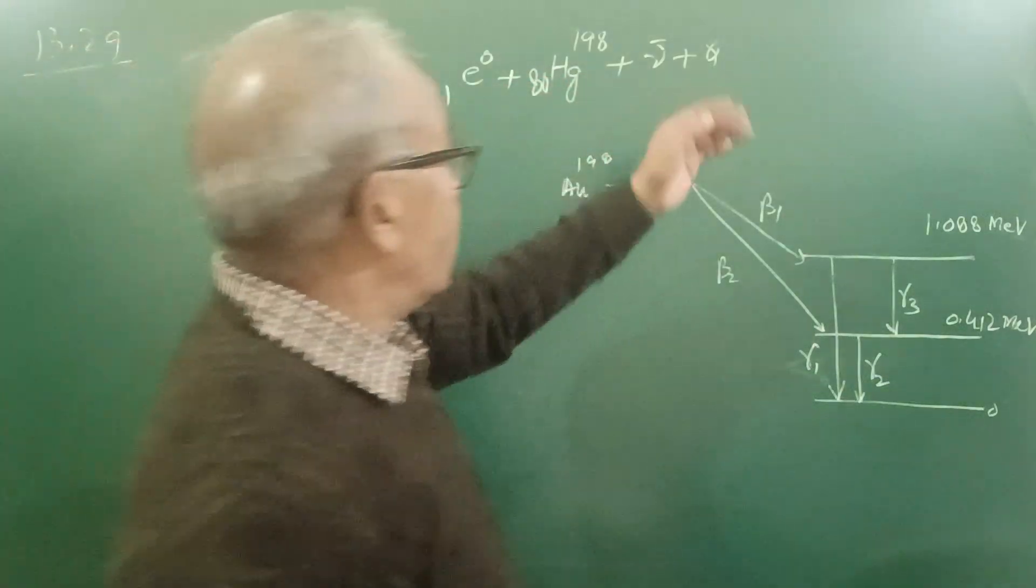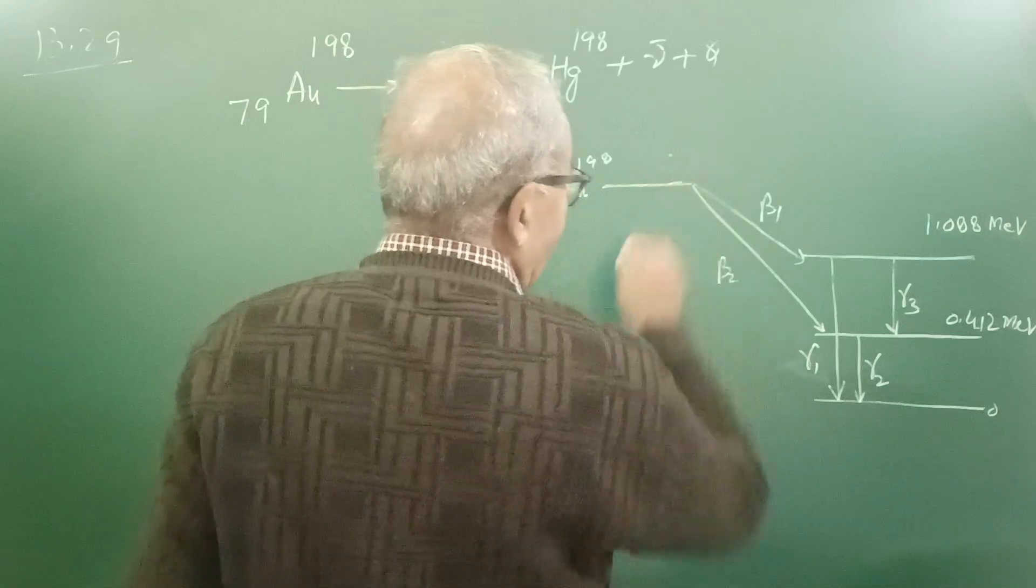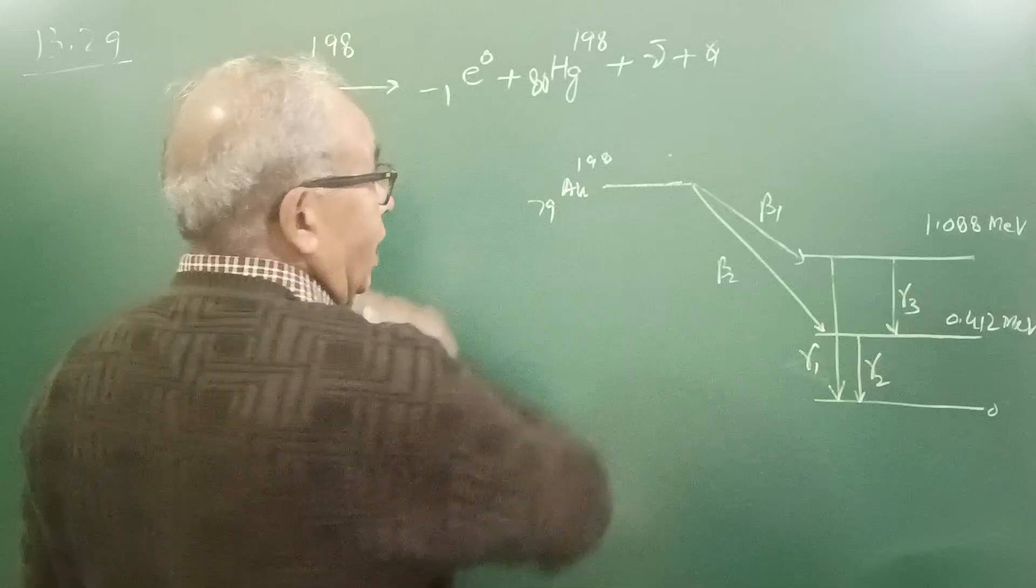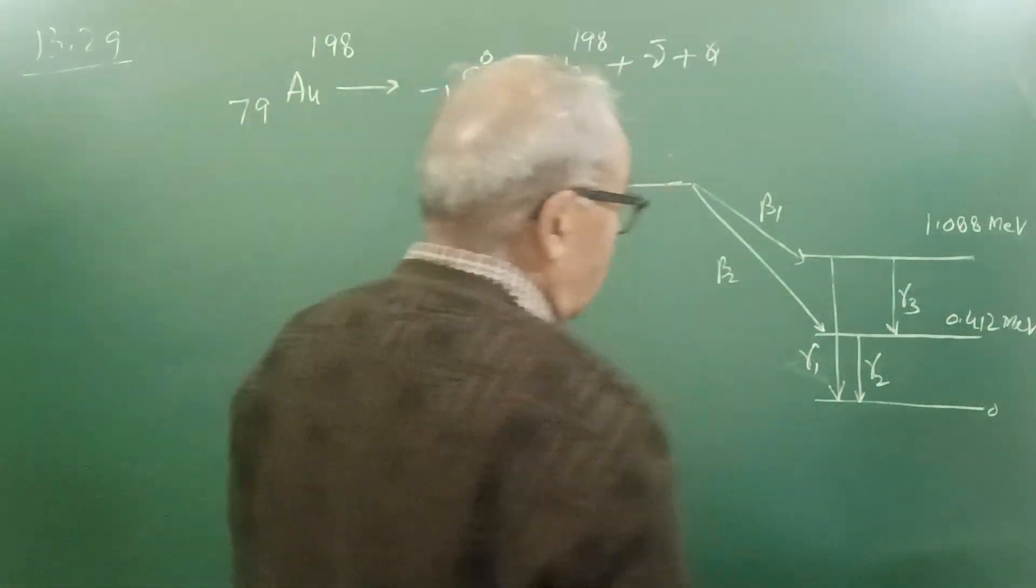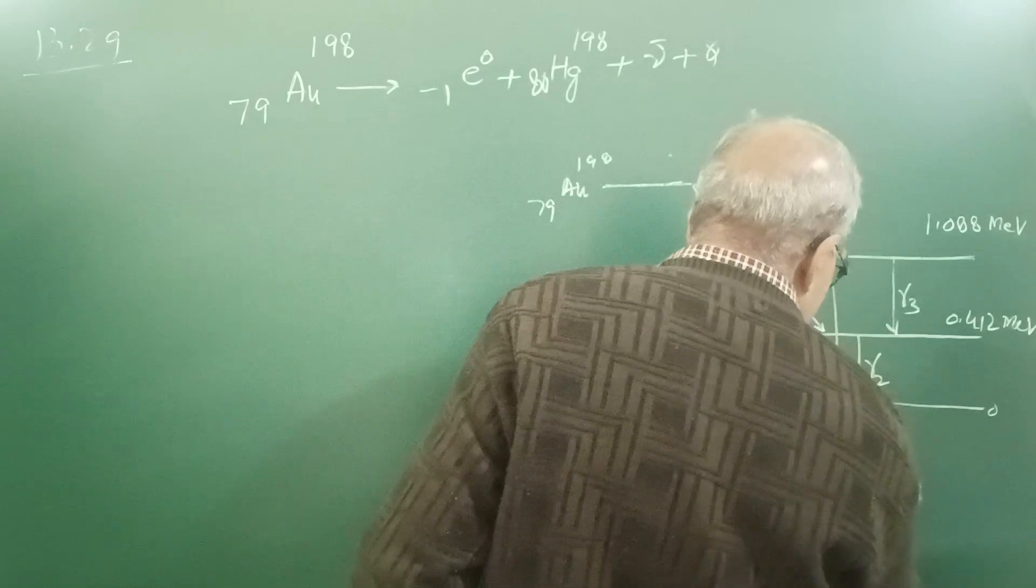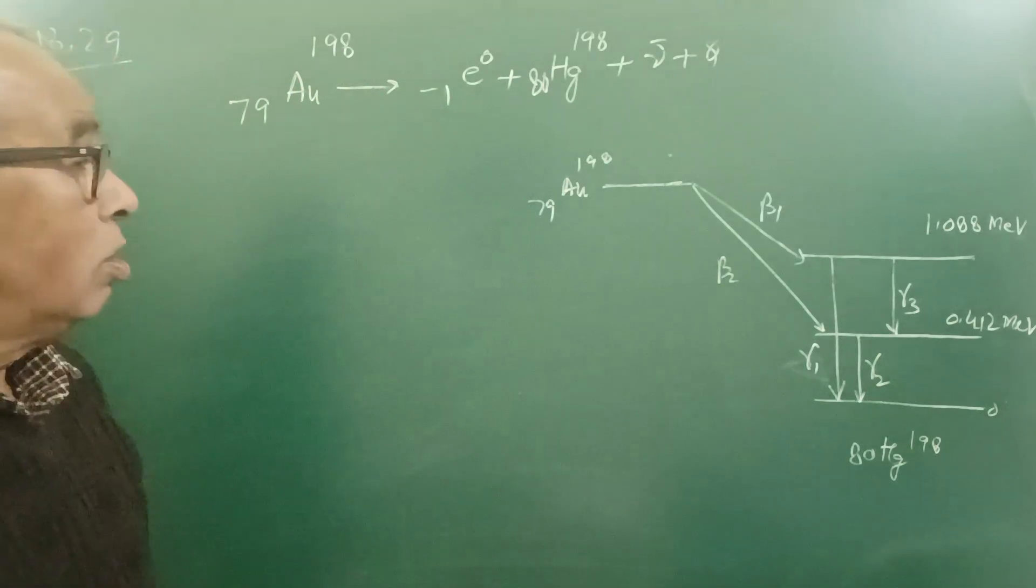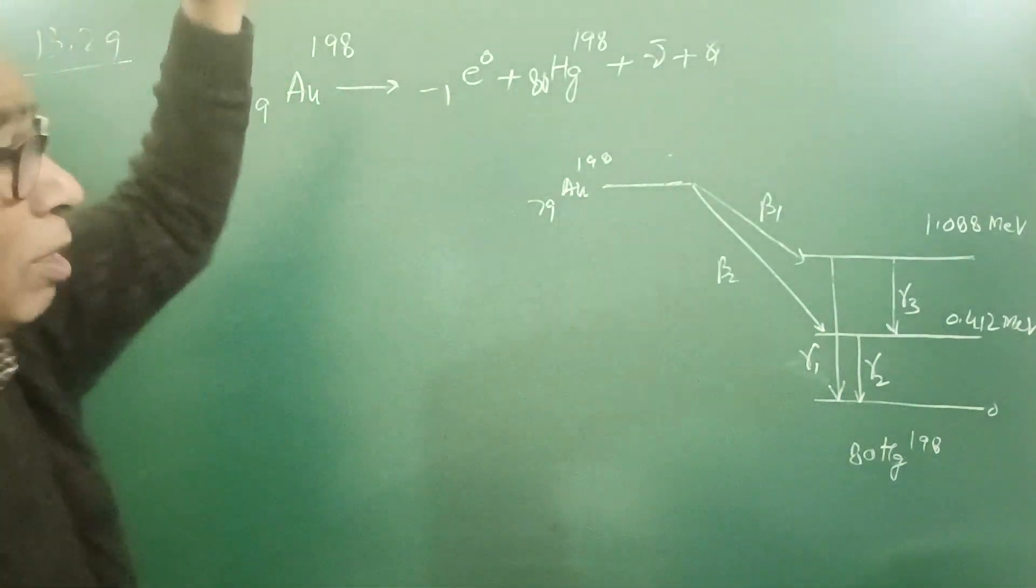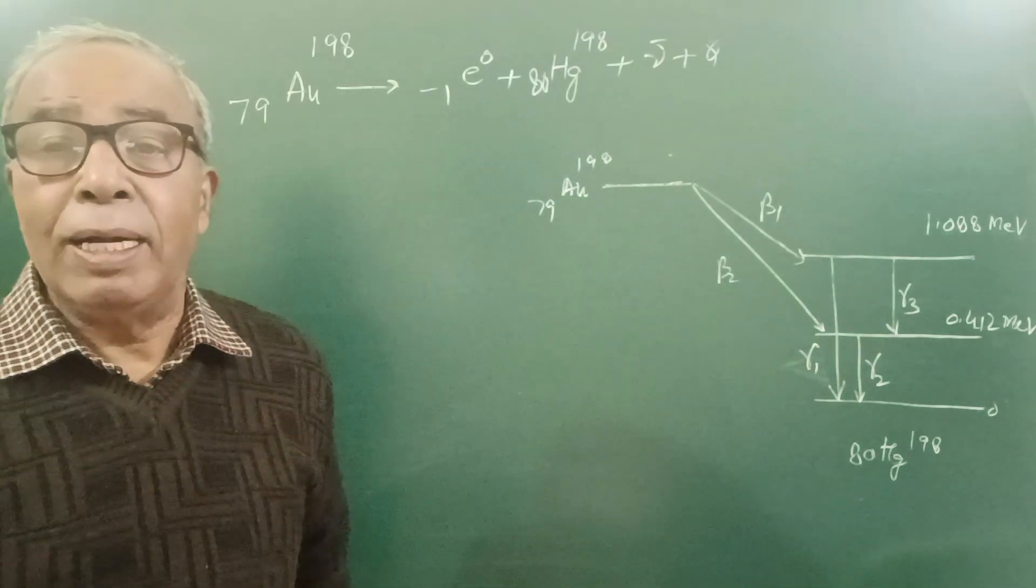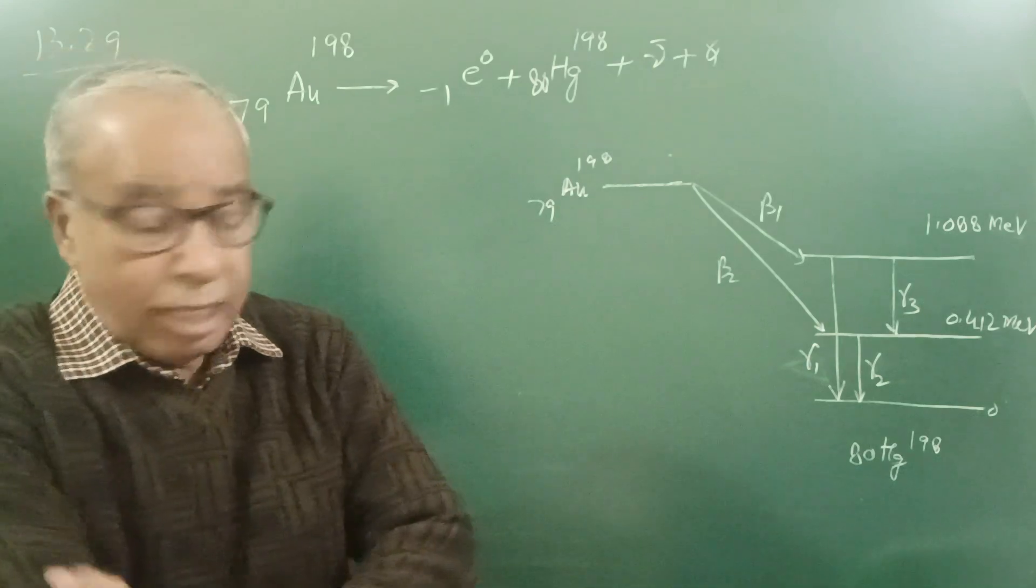This is the energy level diagram. 79 AU-198, these are the energy levels of 80 Hg-198. In beta decay I have told you many times that beta particles have different energies, so this is an illustration of that statement.